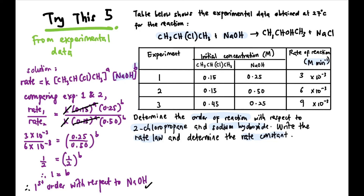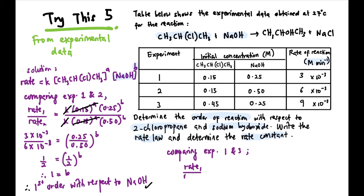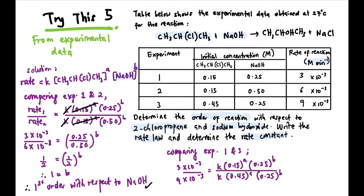Now to find A, we need the concentration of NaOH to be the same so it can cancel out. We see that the concentration of NaOH is maintained at 0.25 in experiments 1 and 3. So to get the order of reaction with respect to chloropropane, we compare experiments 1 and 3: rate 1 over rate 3 equals K times 0.15 to the power of A times 0.25 to the power of B, divided by K times 0.45 to the power of A times 0.25 to the power of B. We substitute the rate values, cancel K and the B terms (0.25 to the power of B appears on both sides), and at the end we get 1 over 3 equals 0.15 over 0.45 to the power of A. Combining, we find that A equals 1.